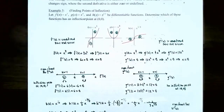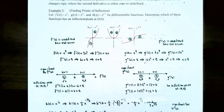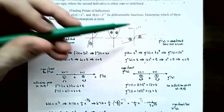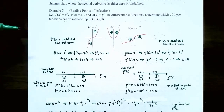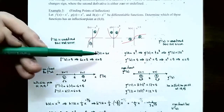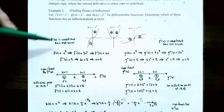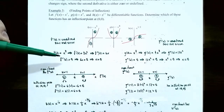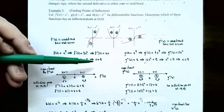Example 5: Finding points of inflection. Let f(x) = x³, g(x) = x⁴, and h(x) = x^(1/3). Determine which of these functions has an inflection point at the origin (0, 0). For f(x) = x³, we need the second derivative. The first derivative f'(x) = 3x², and the second derivative f''(x) = 6x, using the power rule. Now find where the second derivative is either undefined or zero. Since it's a polynomial, f''(x) is undefined never. However, f''(x) = 0 gives 6x = 0, so x = 0 goes on the sign chart.